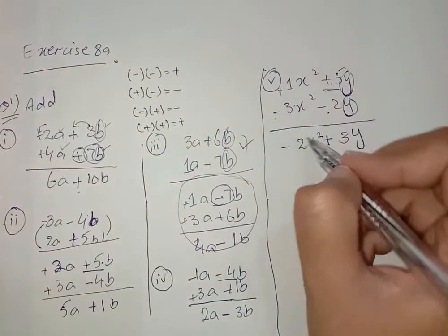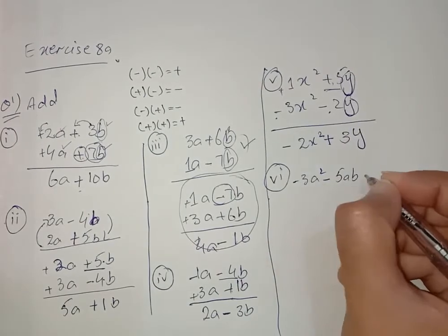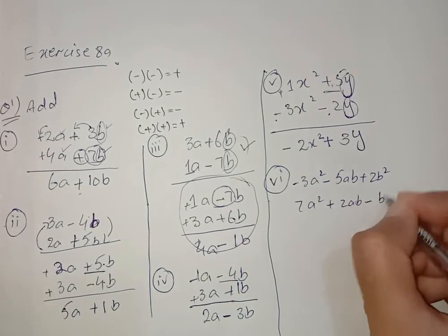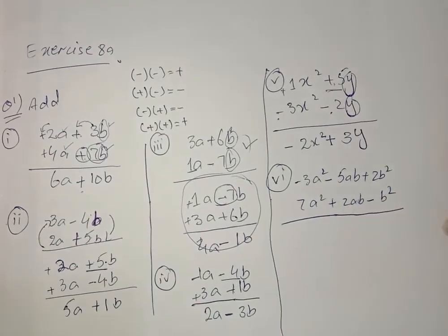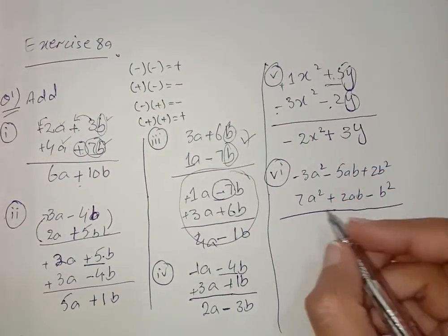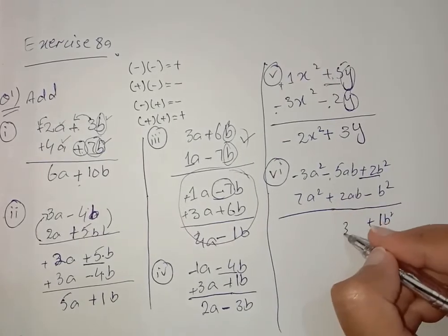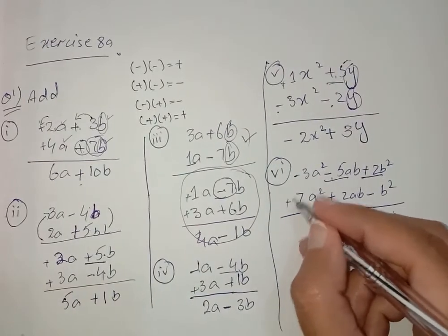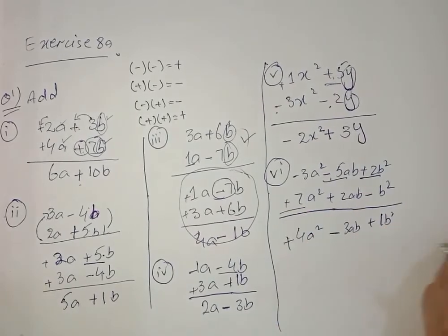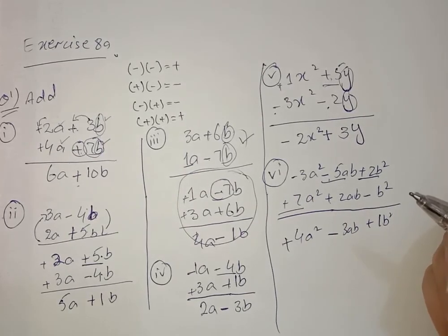Now move towards Part 6, which is minus 3a squared minus 5ab plus 2b squared, and 7a squared plus 2ab minus b squared. Plus minus is minus: for b squared, 2 minus 1 is 1b squared with its sign. Plus minus is minus: for ab, sign of bigger value applies giving minus 3ab. Plus minus is minus: for a squared, 7 minus 3 is 4a squared. We have completed all six questions. We will do the next question in my next video. Allah Hafiz, take care.